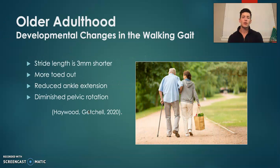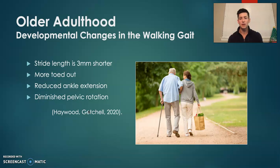Entering into the older adulthood developmental stages of the walking gait, stride length tends to decrease and the toes and base of support tend to get wider or toe out. The amount of ankle extension during the propulsion phase tends to be reduced and the amount of pelvic rotation in each stride tends to diminish.